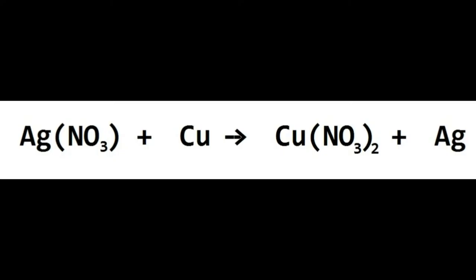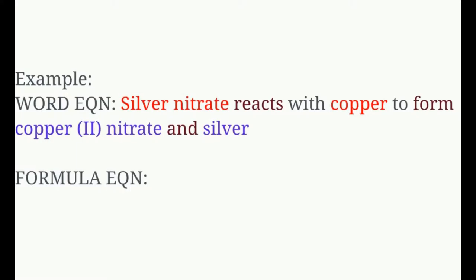To form copper(II) nitrate — you've got to crisscross the charges. A lot of people are going to skip that step. Don't skip it. When you get the new formula, you should get Cu(NO₃)₂. And silver — Ag — by itself, no subscript. As long as you know the crisscross from the previous unit, it's straightforward.